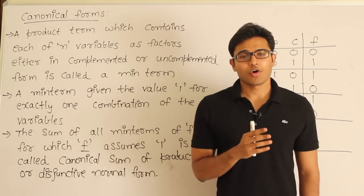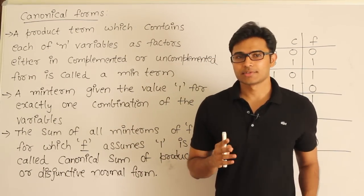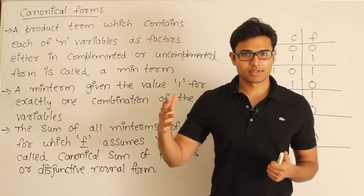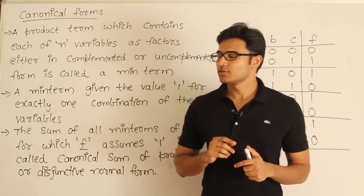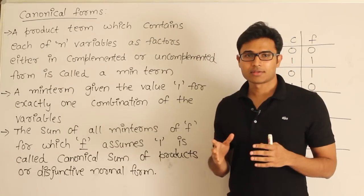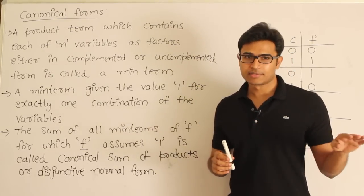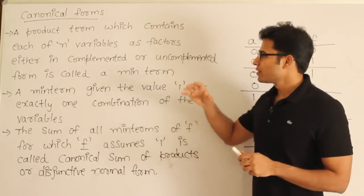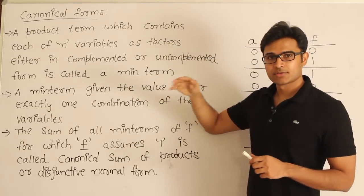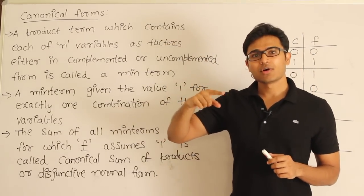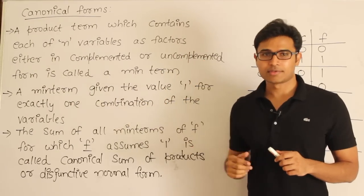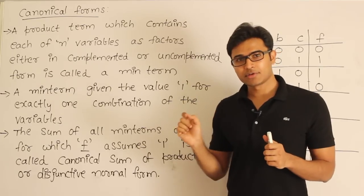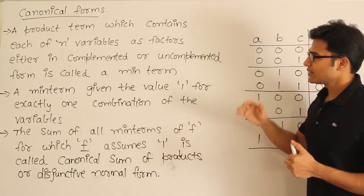Now let's formally define what we mean by canonical forms. There are two types of canonical forms — I'll define the first one and then the next one, and show you with an example. We are done with basics — what is AND, what is OR, what is NOT. From now on I'm going to introduce you to some terminology that will be useful for solving gate questions as well as understanding further topics. Pause the video and take notes.